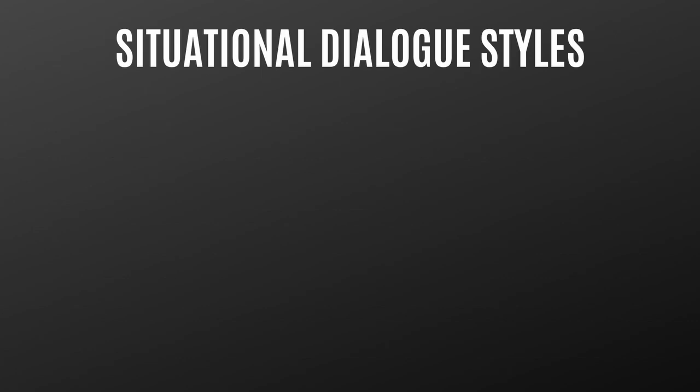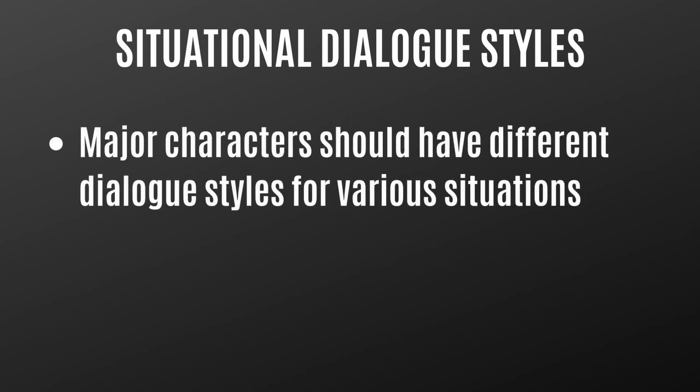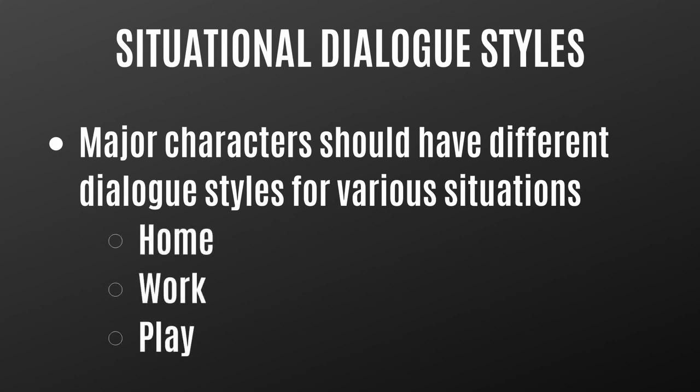The last technique is creating different dialogue styles for different situations. We've talked about distinguishing one character's voice from another, but each of your main characters should also have different dialogue styles when they're at home, at work, and at play. Because when we're around our friends, we speak differently than when we're around family, co-workers, or our boss. So when you come up with your major characters, ask yourself: how do they speak differently in different situations?